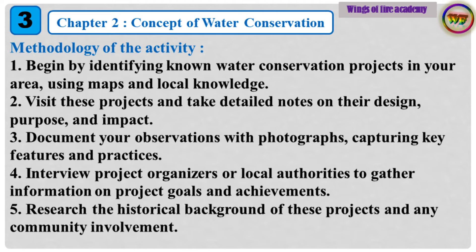Methodology of the activity: 1. Begin by identifying known water conservation projects in your area using maps and local knowledge. 2. Visit these projects and take detailed notes on their design, purpose, and impact. 3. Document your observations with photographs, capturing key features and practices. 4. Interview project organizers or local authorities to gather information on project goals and achievements. 5. Research the historical background of these projects and any community involvement.